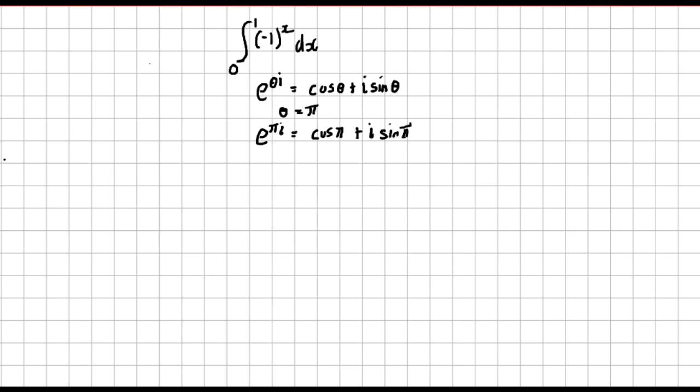If you substitute here, remember cos π is like cos 180 degrees which is negative 1, plus i sine π. Sine π is sine 180 degrees which is 0. So negative 1 plus i times 0 is 0, you will remain with negative 1. So it implies exponential πi is the same as negative 1.